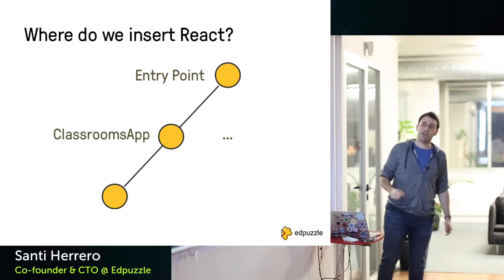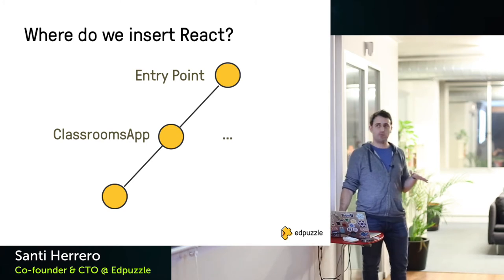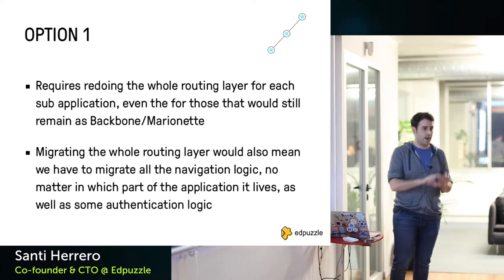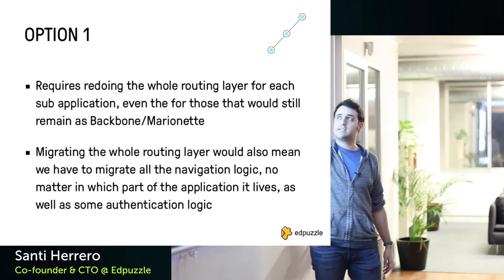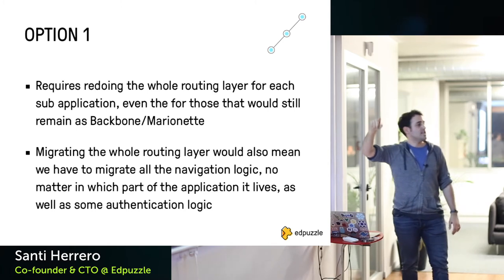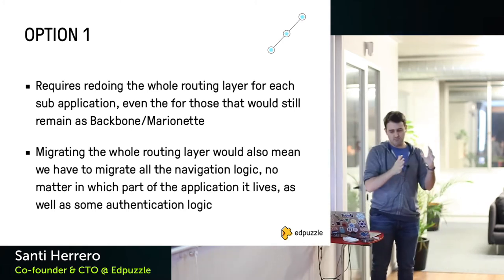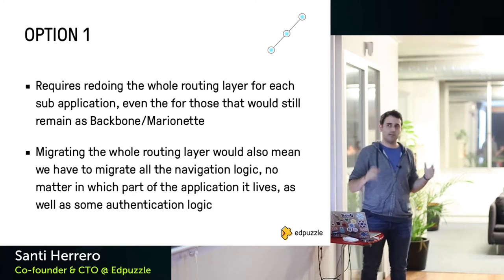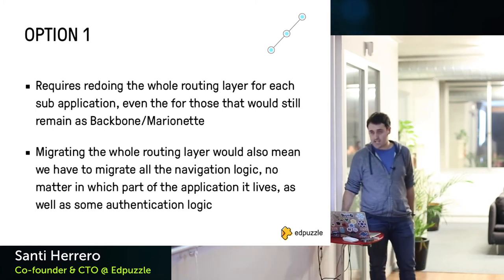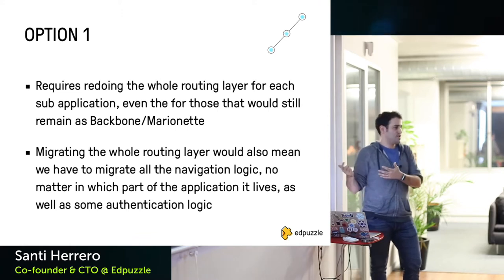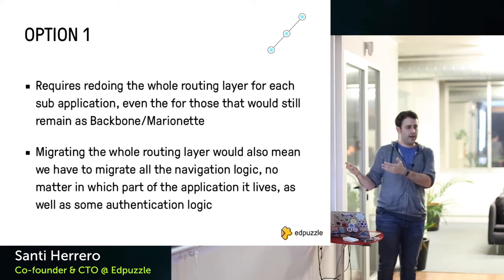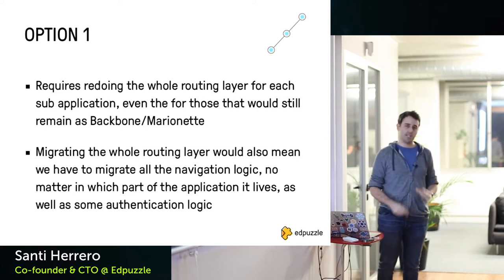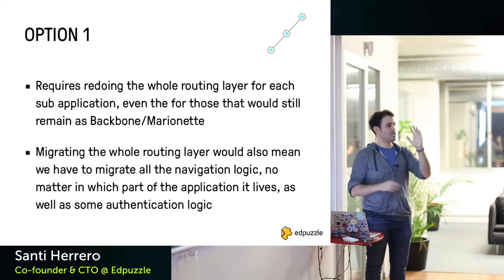So where do we insert React in this architecture? Three options. Option one: everywhere — essentially a full rewrite of that sub-application. It requires redoing the whole routing layer, which lives in the top two nodes for all 25-26 apps. The routing layer looks simple but contains a lot of authorization logic, and you need the whole context in your head to change it properly. Migrating the routing layer also means touching every file where you do navigation — it's going to be a lot of work.